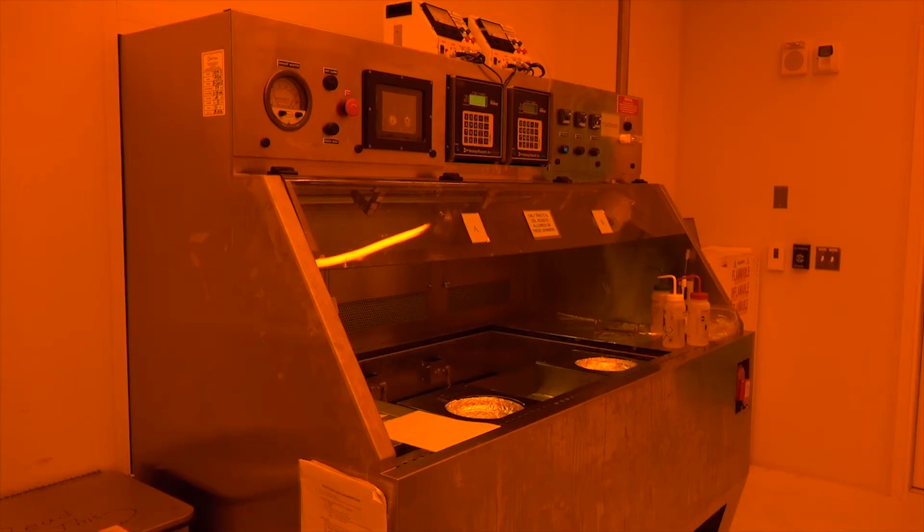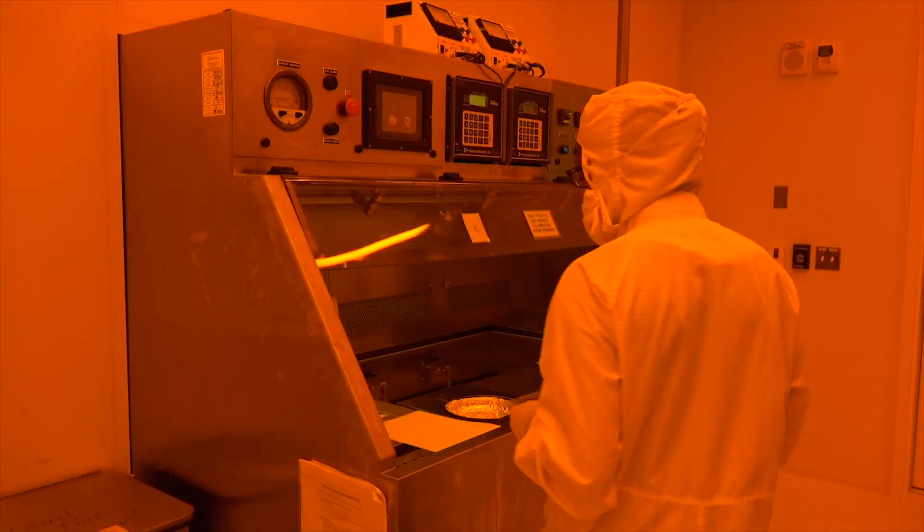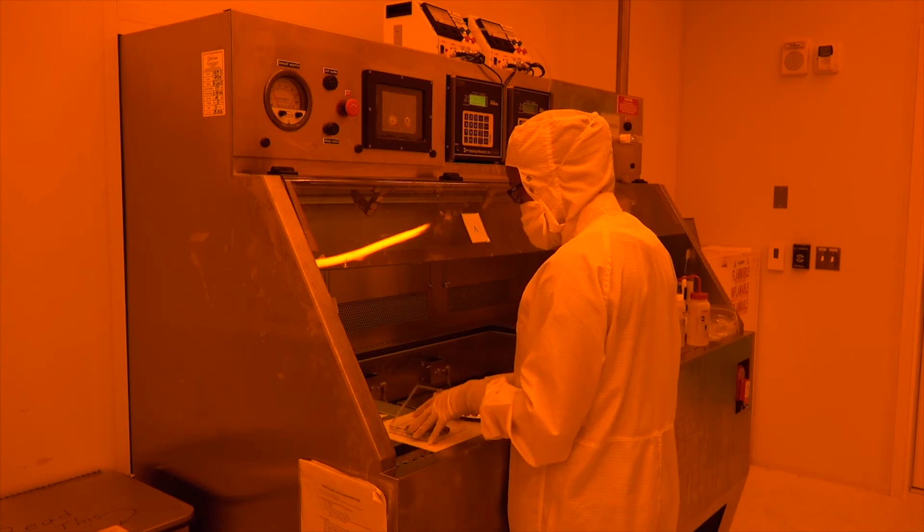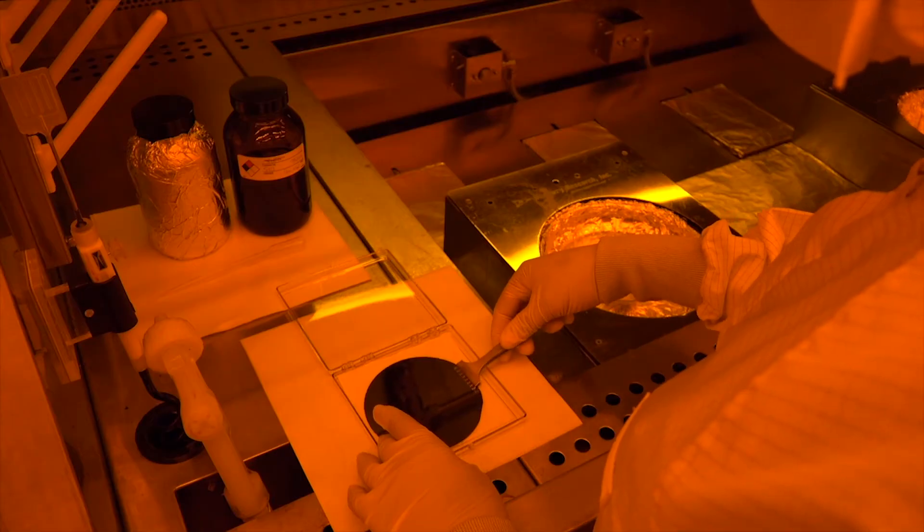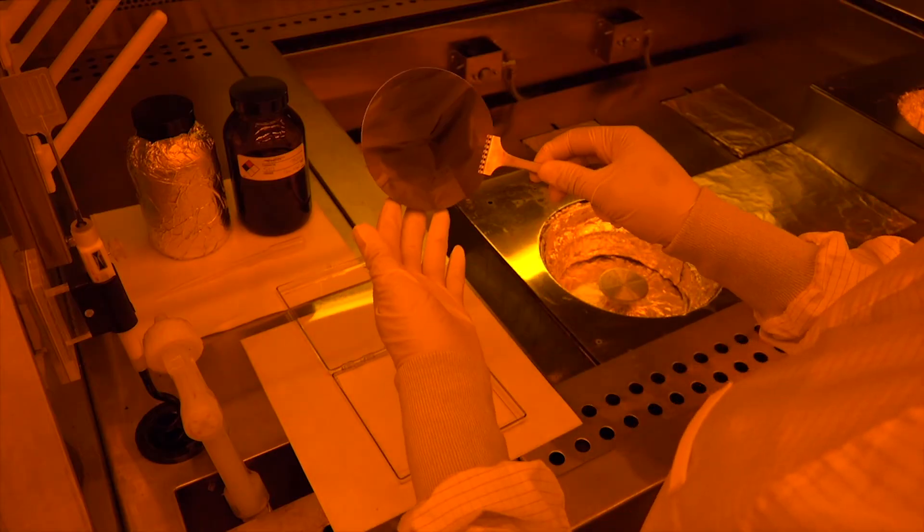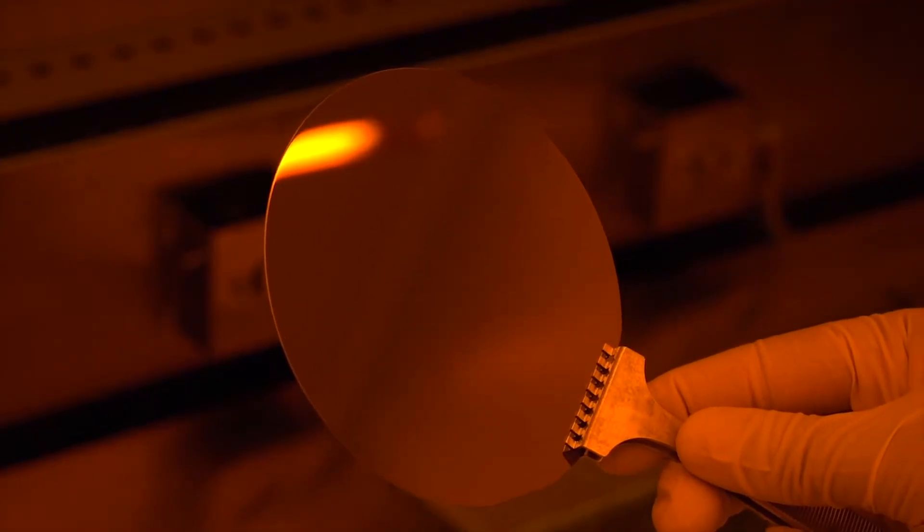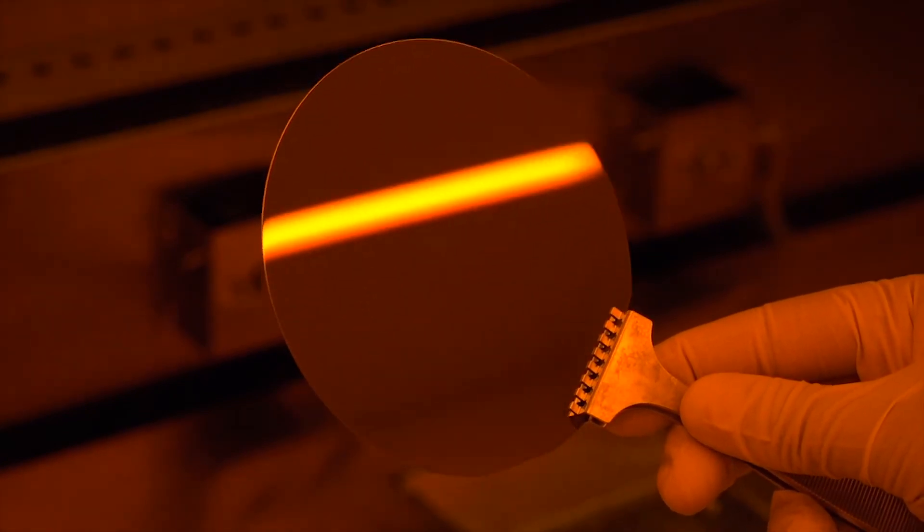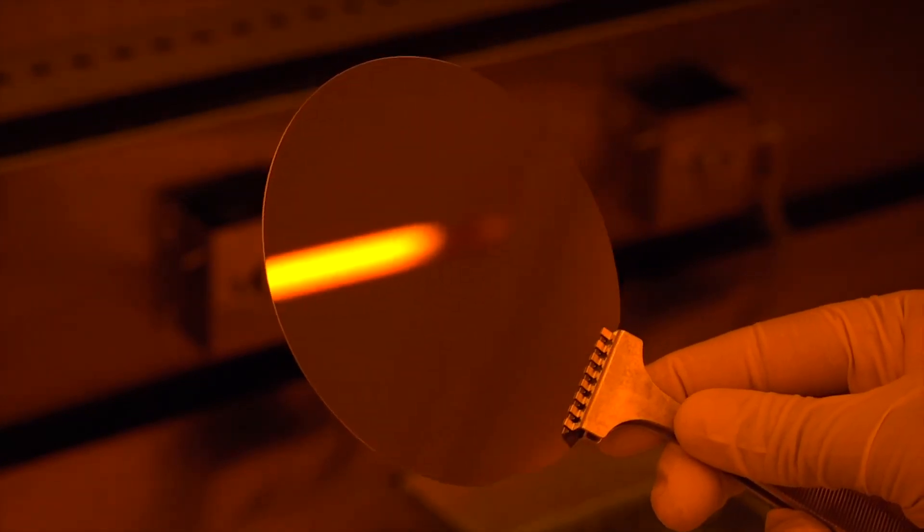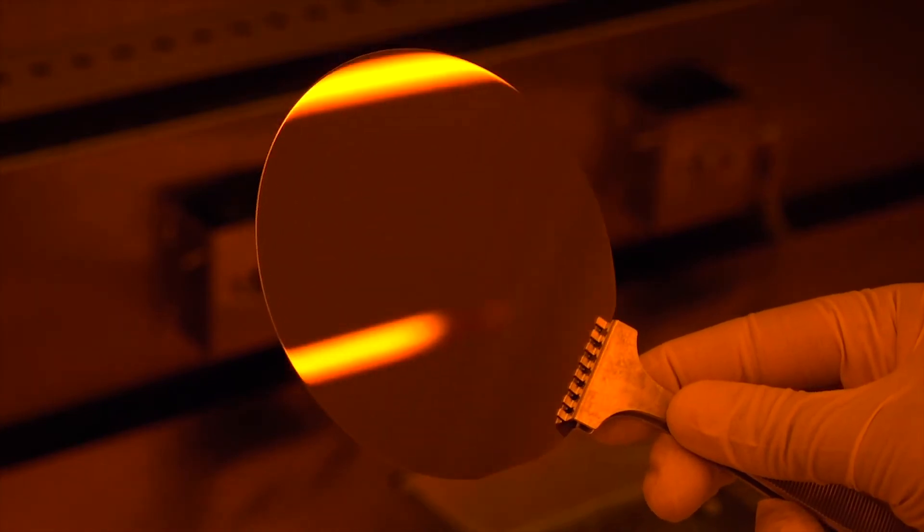Let's get started with our photolithography process. First, we choose a substrate. In this case, we will be using a silicon wafer. Silicon is the most common semiconductor material used in the electronics industry. This particular wafer is 100 millimeters in diameter and approximately 500 micrometers thick. For this demonstration, we will pattern the wafer using photolithography, and then permanently transfer that pattern to the silicon using an etching technique.